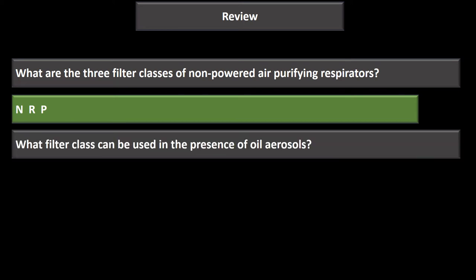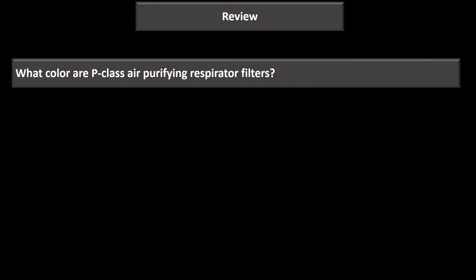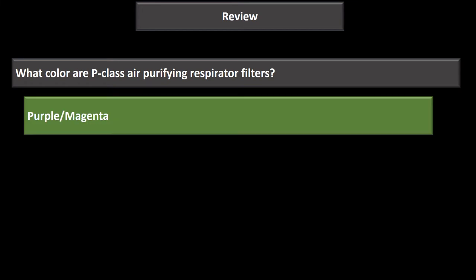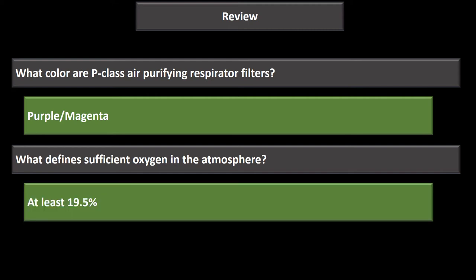The P-class can be used in the presence of oil aerosols and is oil proof. The R-class can be used in oil aerosols for a single shift only. P-class filters are magenta or purple. Sufficient oxygen for air purifying respirators is defined as at least 19.5%.